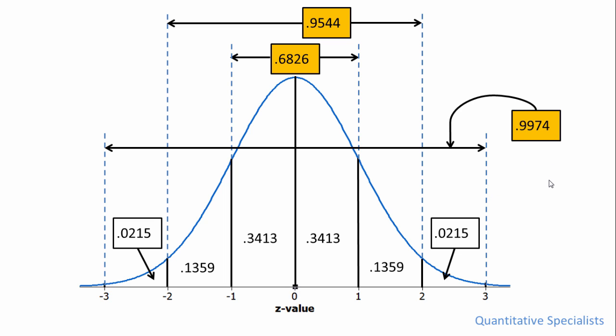Which tells us that 99.74% of the values in a normal distribution all fall within three standard deviations of the mean, or in other words, they fall from negative 3 to positive 3 of a z-score.